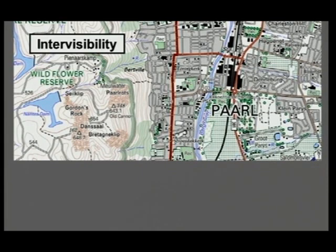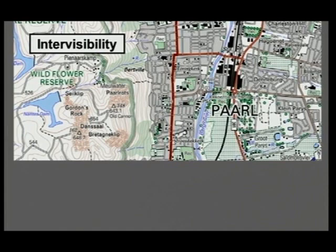All you have to do — as you noticed from the previous slide — is look for a blocking feature. You must look for something higher in between the school and PAL Rock that could block your line of vision. In other words, you must know the height of PAL Rock and the height of the school.